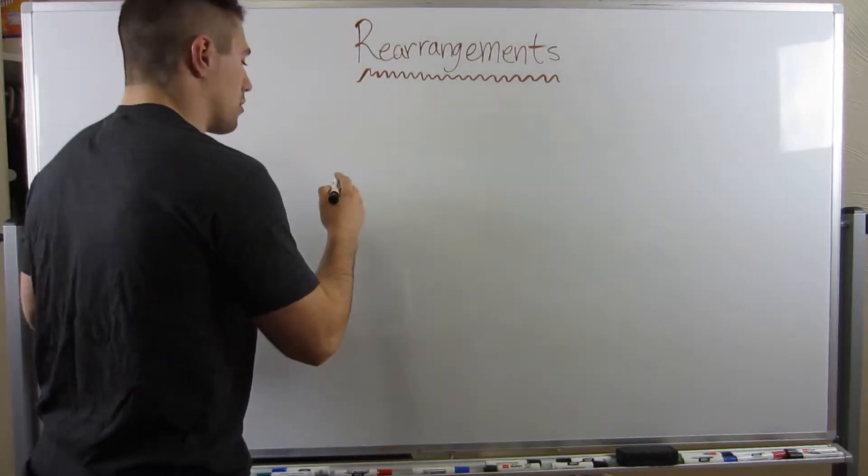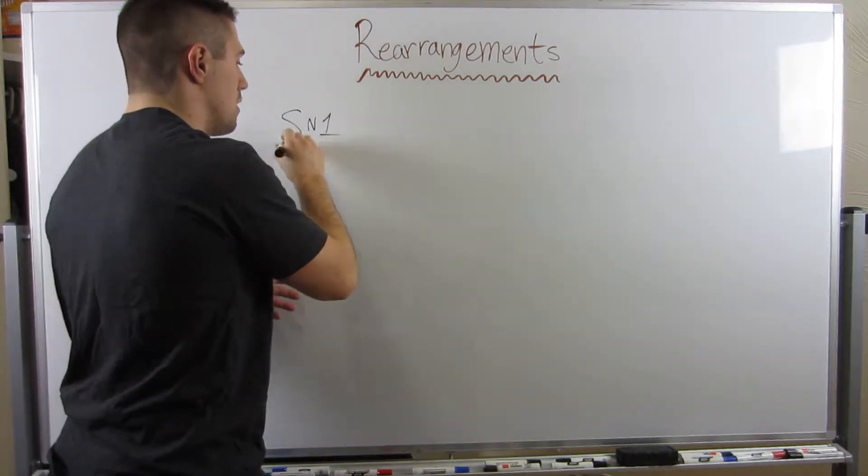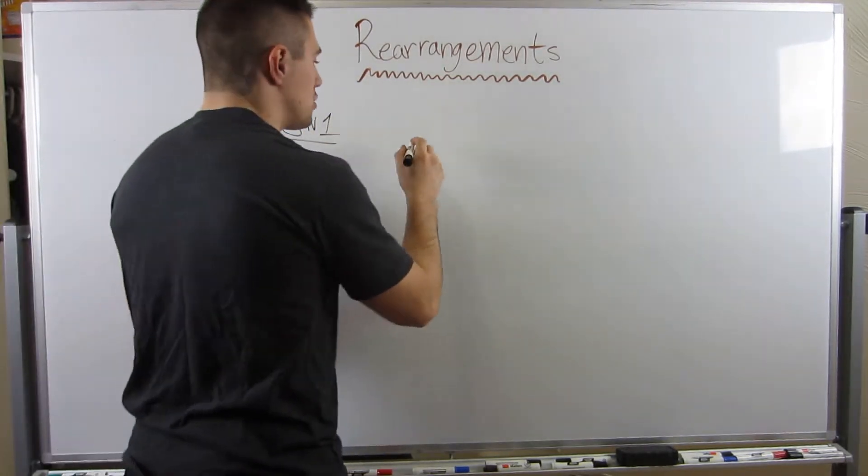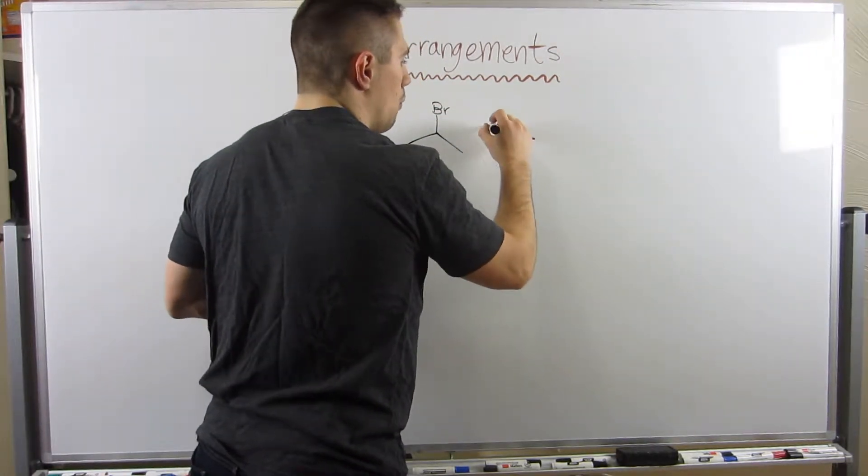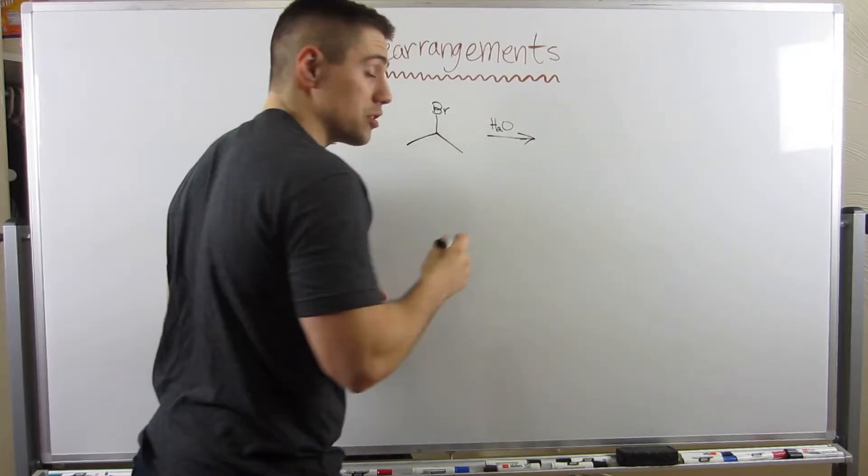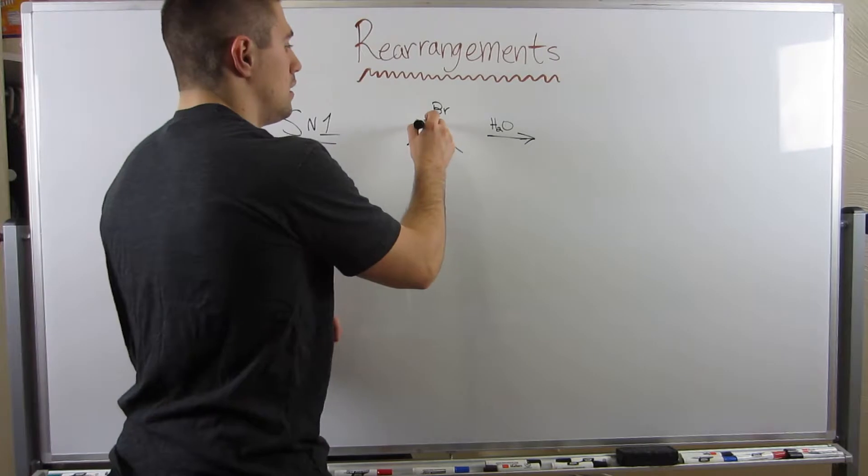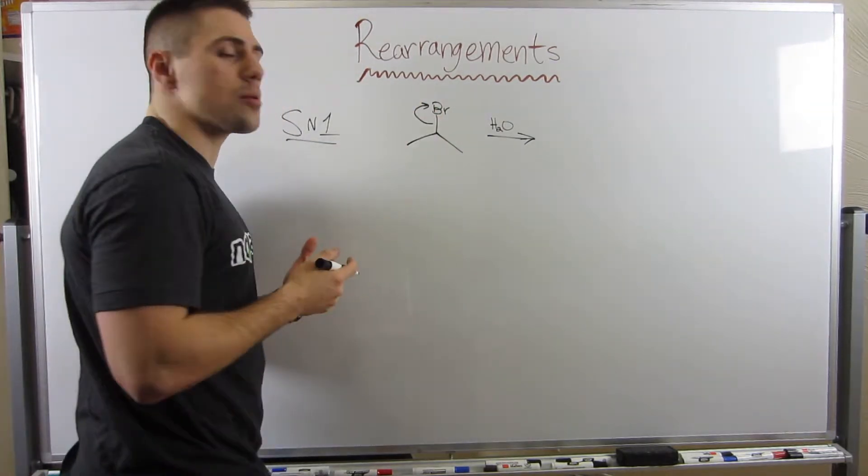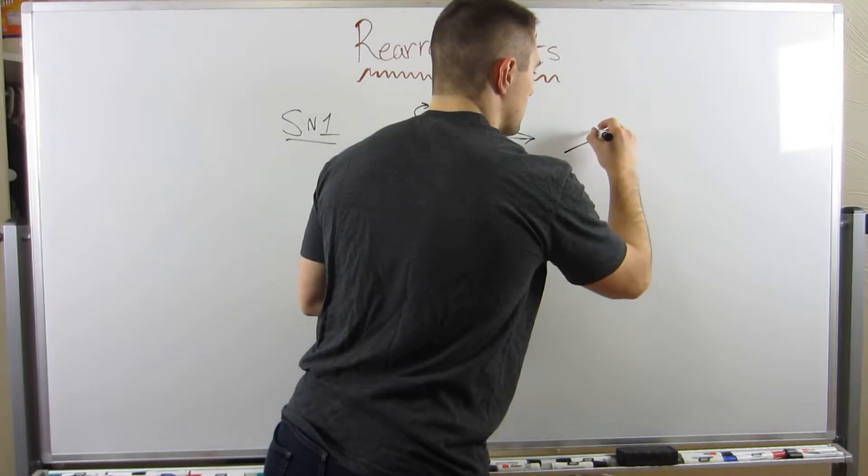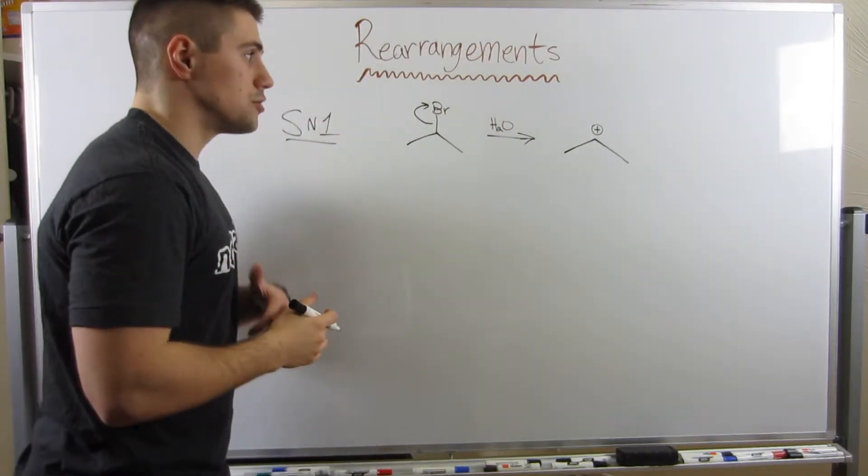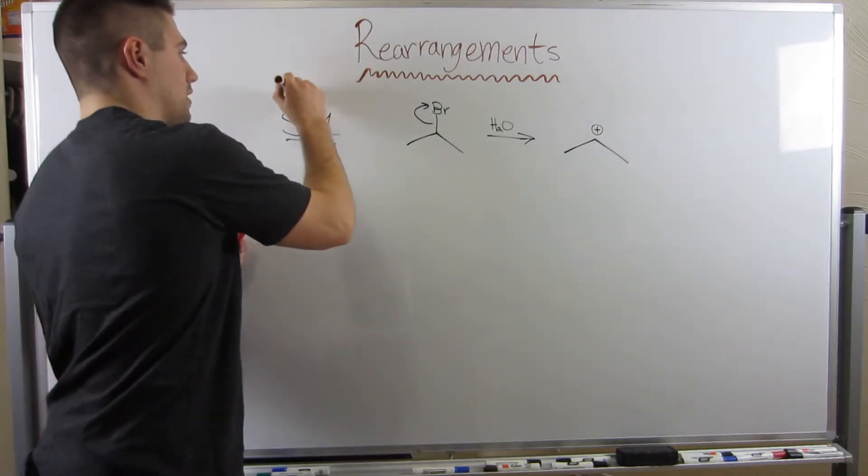First I want to go over the ways we currently know how to make carbocations. Remember when we did SN1 reactions, solvolysis made us a carbocation. Let's just say I had isopropyl bromide and I had water as our solvent, a polar protic solvent. That's going to help wane this good leaving group off. If I'm just going to show you guys the carbocation intermediate, it would look something like this, just a secondary carbocation.